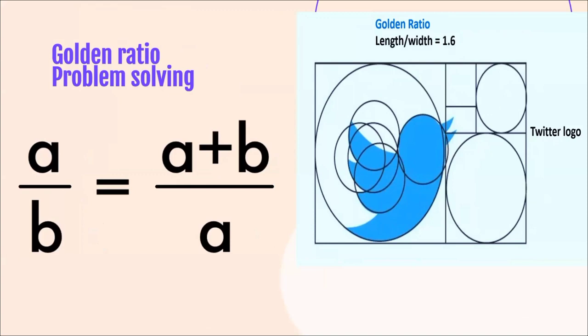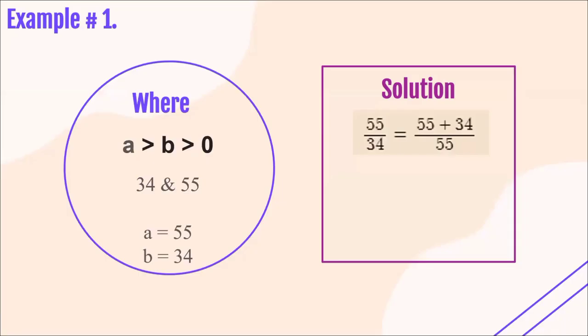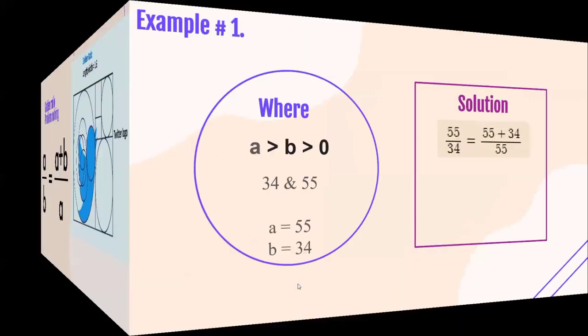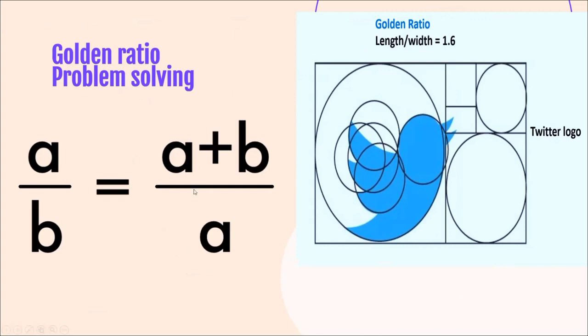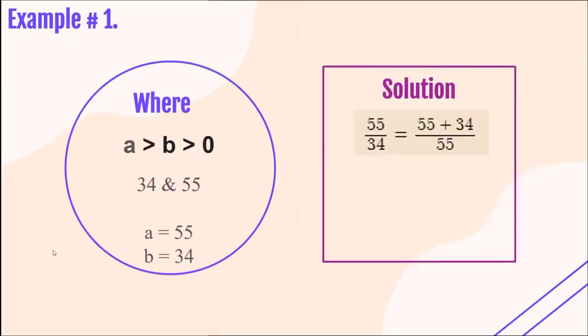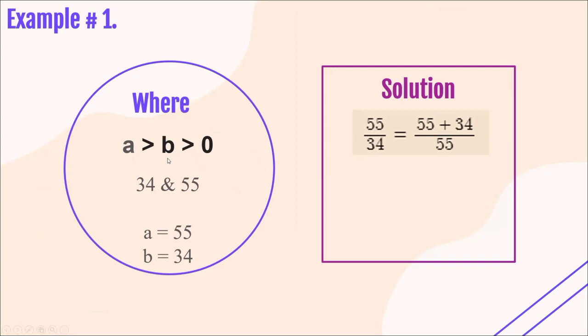So, this is our formula to get the Golden Ratio. At the right side is the Twitter logo that used the Golden Ratio. Let's proceed to problem solving. We can say that two numbers are in Golden Ratio if they satisfy the equation: A over B equals A plus B over A.